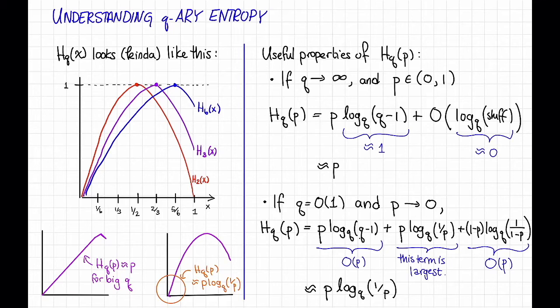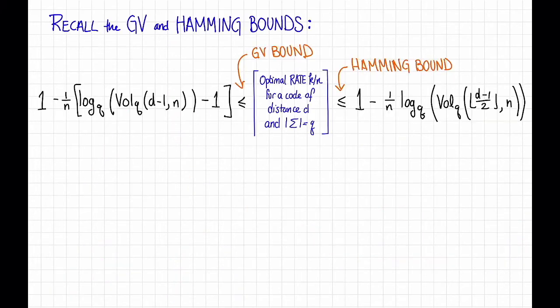There are many other parameter regimes you might care about, and for a lot of them, you can get some good sort of back of the envelope understanding of how things behave, either by doing an analysis like this, so writing out the terms and observing that one will dominate, or by taking a Taylor expansion and seeing what happens. Now that we understand the q-ary entropy, at least a little bit, let's use it to simplify our expressions for the GV and the Hamming bounds.